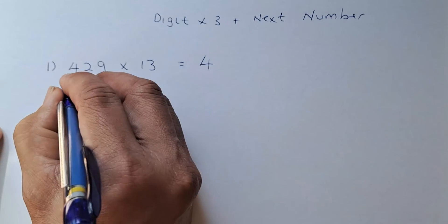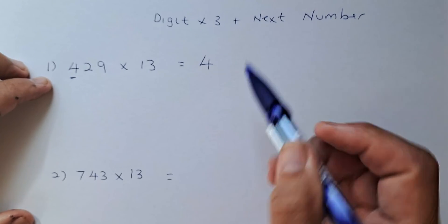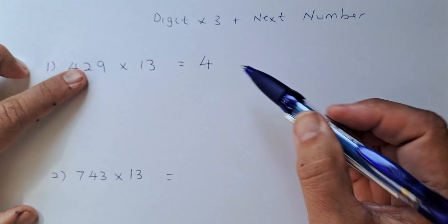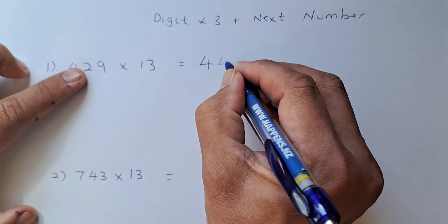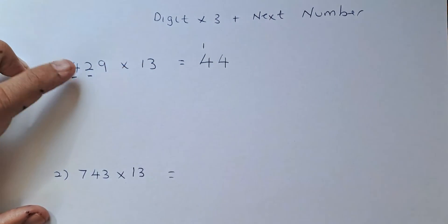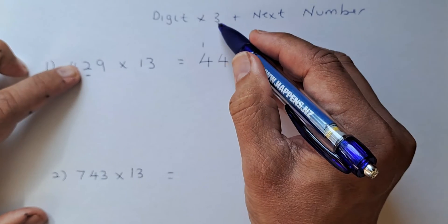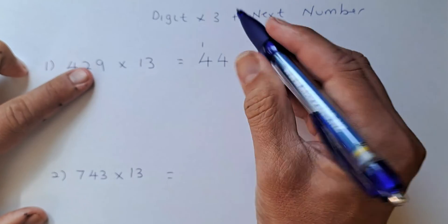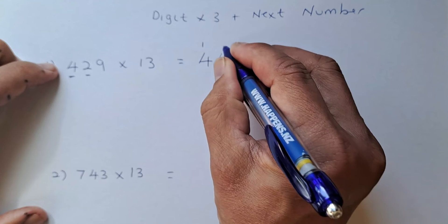Now we look at 4. 4 multiplied by 3 is going to be 12 plus 2 is going to be 14. So 4 carry up 1. Then we look at number 2. 2 times 3 is going to be 6 plus 9 is going to be 15. So 5 carry up 1.